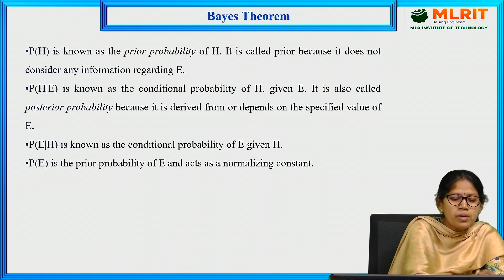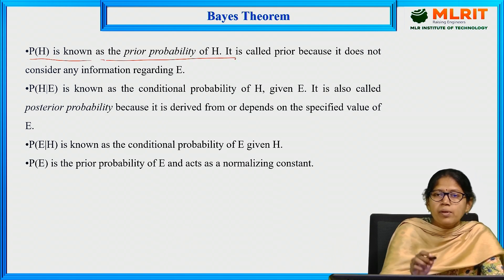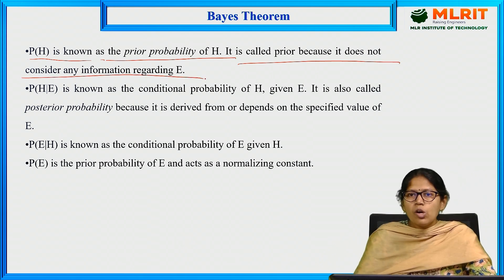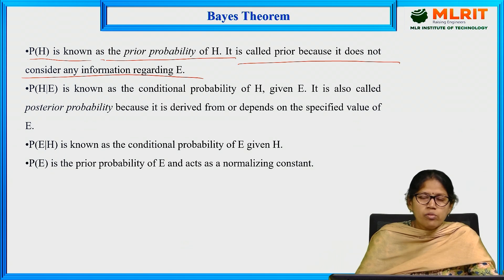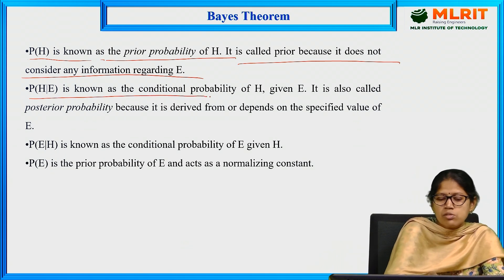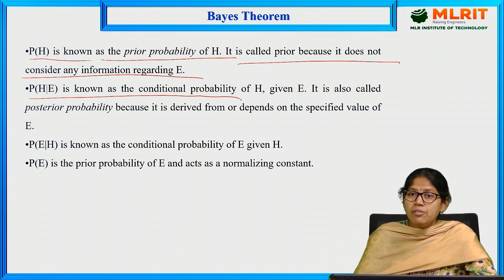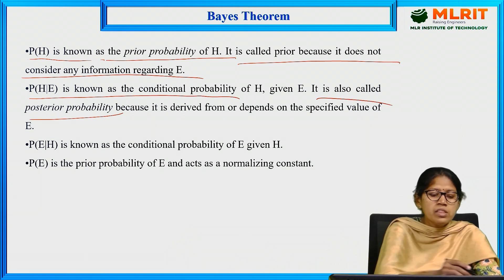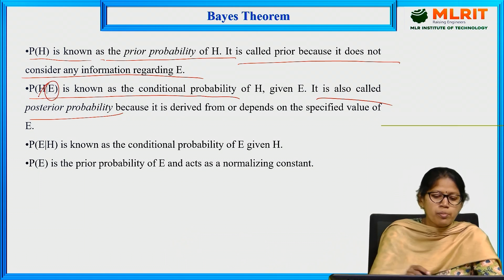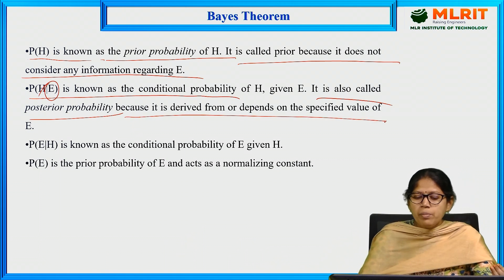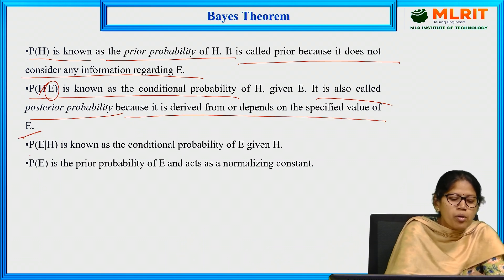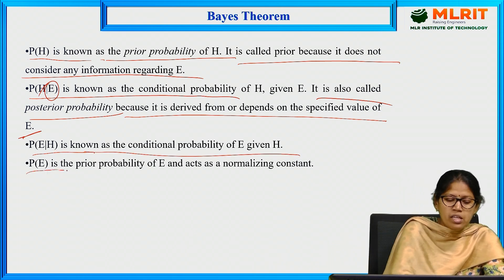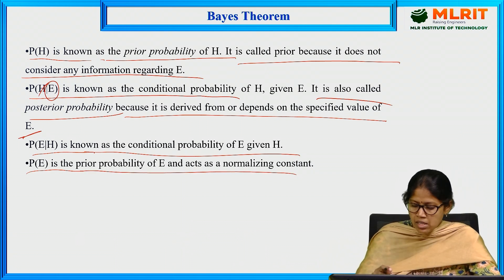Probability of H is known as the prior probability of H. Probability of H given E is called the posterior probability, because it is the combination of prior probability with evidence — it depends on the specified value of evidence E. Probability of E given H is known as the conditional probability of E given H. Probability of E is the prior probability of E and acts as a normalizing constant.